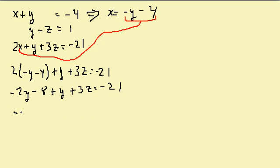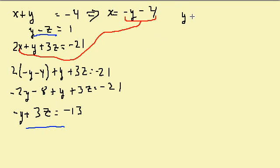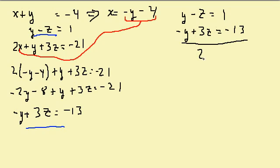So I get negative y plus 3z, and moving the negative 8 over gives me negative y plus 3z equals negative 13. Now I have two equations with two unknowns: y minus z equals 1 and negative y plus 3z equals negative 13. I add them and get 2z equals negative 12. Dividing by 2, I get z equals negative 6.